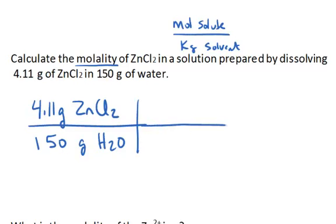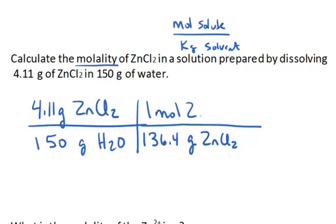All right, that's easy enough. Anytime we're given a pure substance, a mass, we can convert to the number of moles simply using the molar mass, which I am going to calculate off the periodic table. The molar mass for zinc chloride is 136.4 grams of zinc chloride per one mole of zinc chloride.